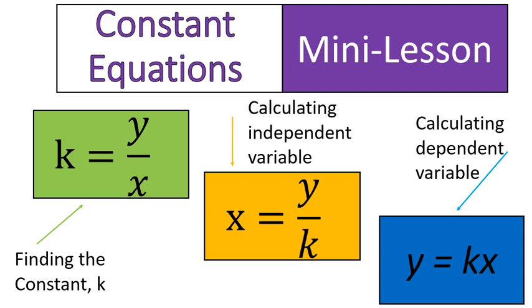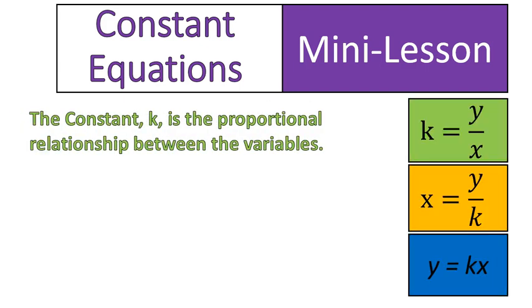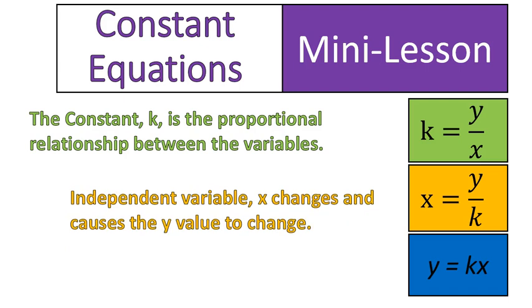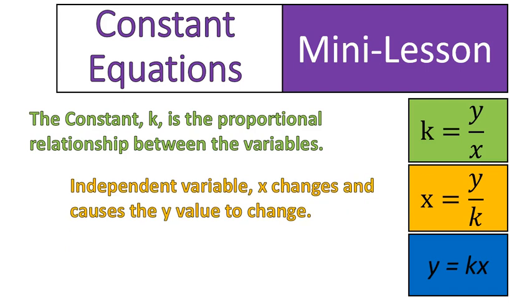First off, I think we need to know a little bit about what the dependent versus independent variables are. So again, the constant here is the proportional relationship between the variables. The independent variable is the one that changes and it causes the other value to change. And we'll see examples of that. And each time, I'll try and remind myself to say, look at how when this changes, it forces the other one to change.